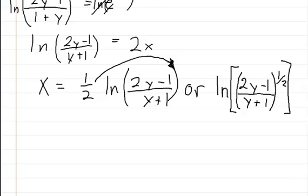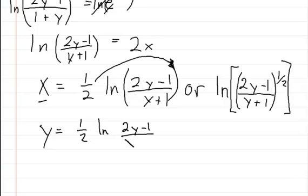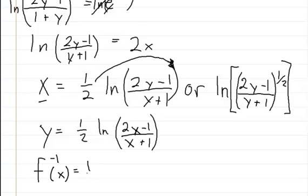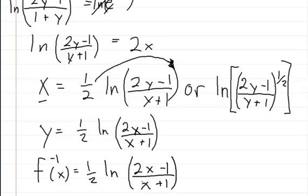Anyhow, that's how you would do that. But don't forget — when you get to this part, you need to change the x's to y's and the y's to x's. So this would turn to: y is equal to 1 half, the natural log, of 2x minus 1 divided by x plus 1. So there we switched the y's to x's and the x's to y's. Then to finish it off, you just change the y to f inverse of x. So you write the inverse symbol right there, and you get 1 half times the natural log of 2x minus 1 divided by x plus 1. And that is the inverse to the problem.